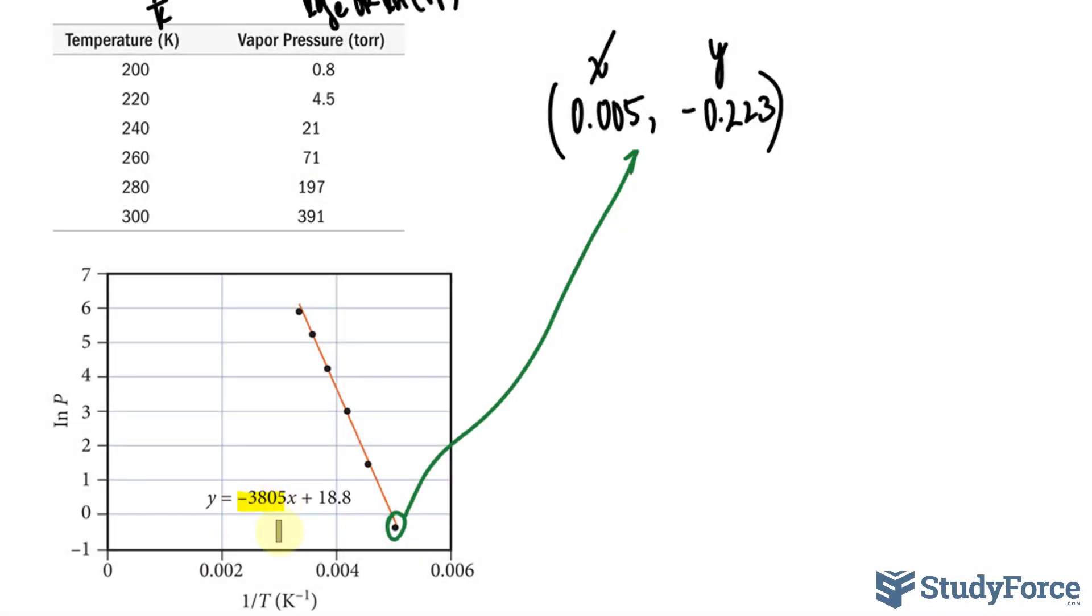Take a look. This part right here, the one that's being multiplied to the x variable, is the slope. And 18.8 is the y-intercept.